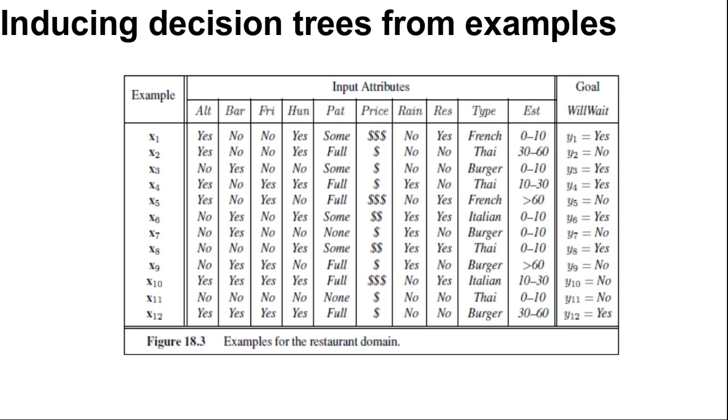We want a tree that is consistent with the examples and is as small as possible. Unfortunately, no matter how we measure size, it is an untractable problem to find the smallest consistent tree.